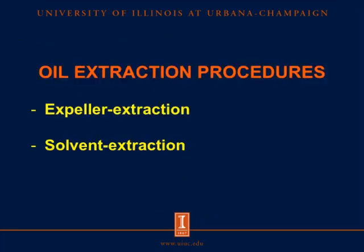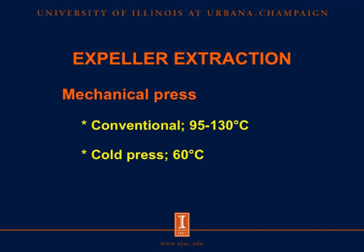For oil extraction procedures, there are two different types used to remove oil from canola and rapeseed: expeller extraction and solvent extraction. For expeller extraction, mechanical press is used to remove the oil. Temperature for conventional expeller extraction can range from 95 to 130 degrees Celsius, depending on the screw speed. There is also another type called cold press, where temperature is controlled to not exceed 60 degrees Celsius, preferred by customers who want virgin oil without high temperature and chemical reagents.